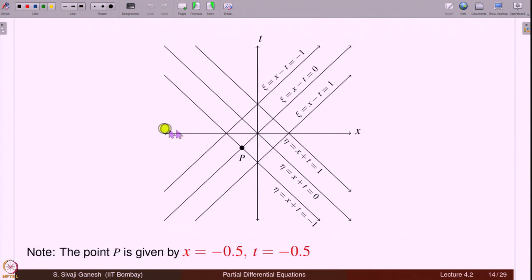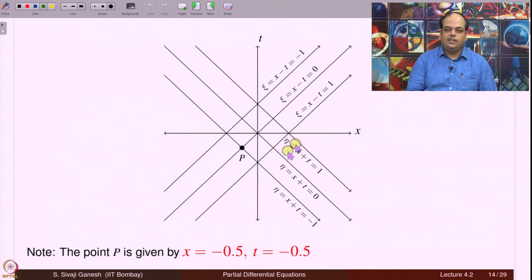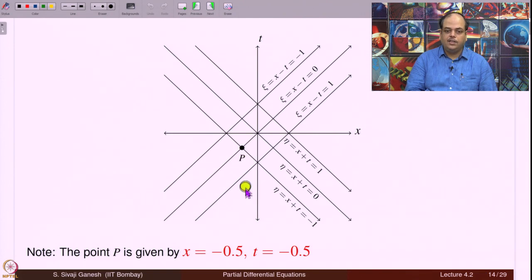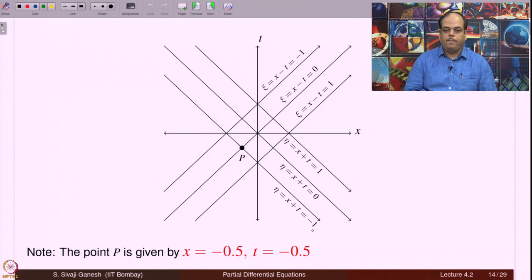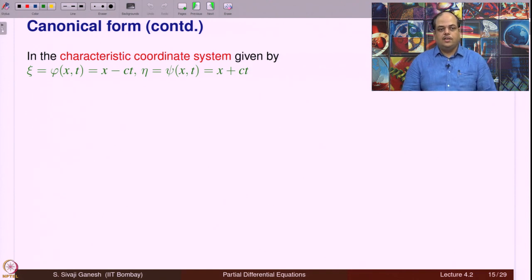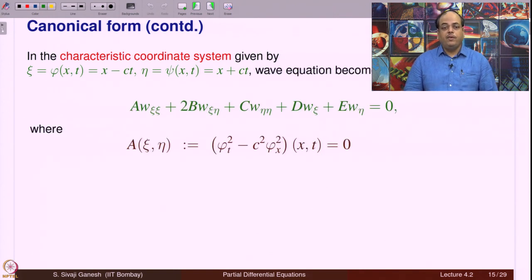The characteristic coordinate system is an anti-clockwise rotation of the x-t coordinate system, as shown in the picture. In the original x-t coordinate system and the ξ-η system with ξ = x − t and η = x + t, they are orthogonal because c = 1. For example, point P with x = −0.5, t = −0.5 in x-t coordinates corresponds to ξ = 0 and η = −1 in the characteristic coordinate system.